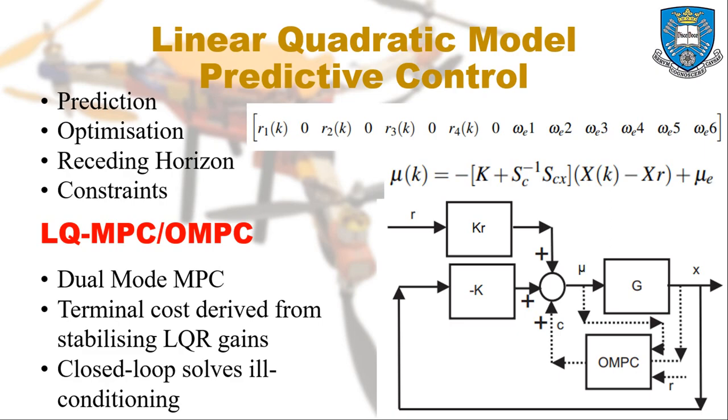A receding horizon adds feedback into predictive control, as control sequences generated data continually updates at every single time step, taking in new information.